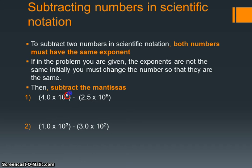In the first example, the exponents are the same, so we can simply subtract the mantissas. We have 4 and 2.5. So 4 minus 2.5 is 1.5 times 10 to the 5th.